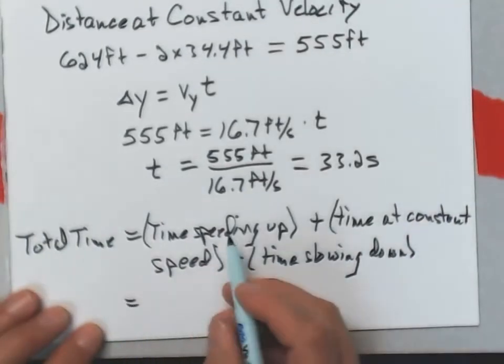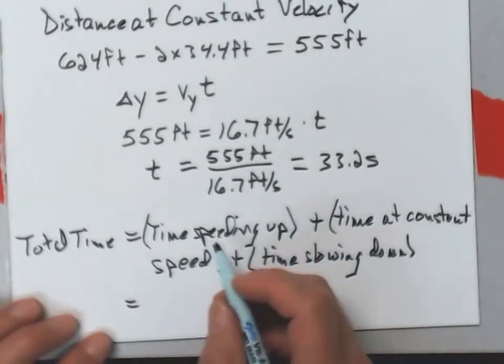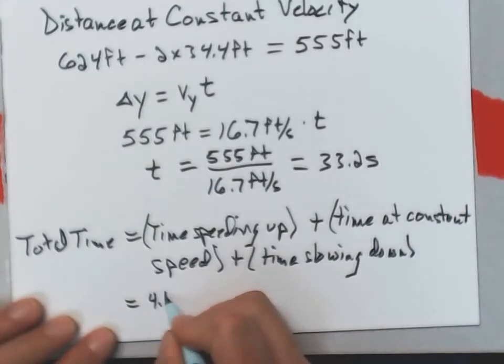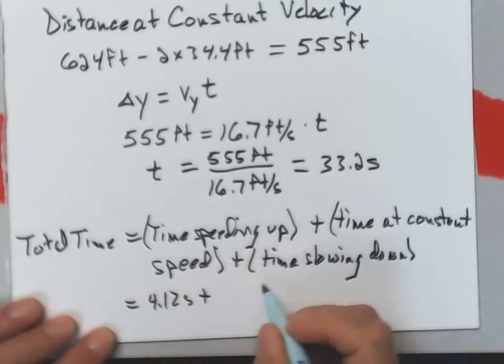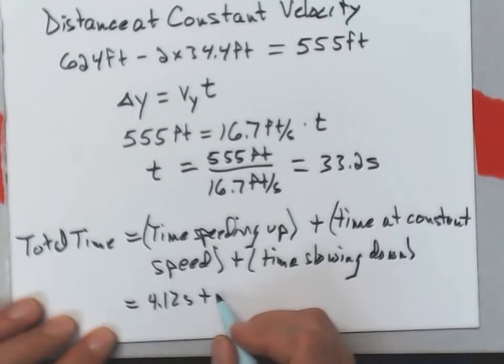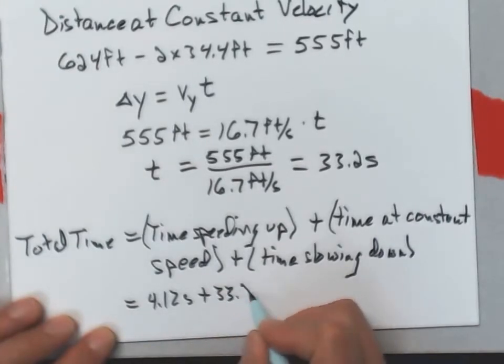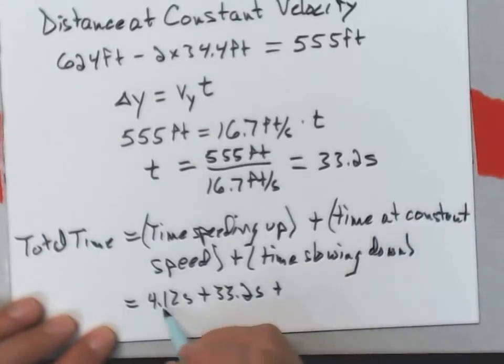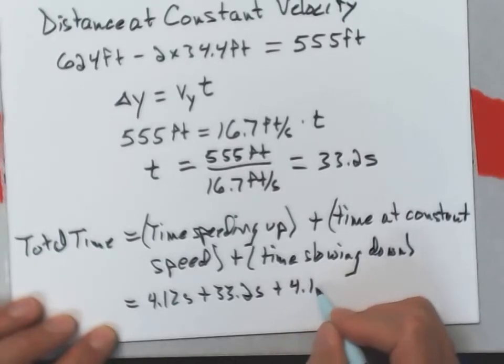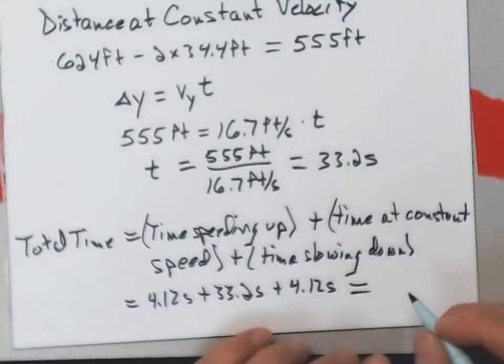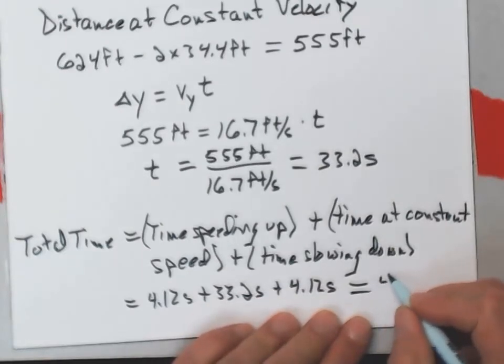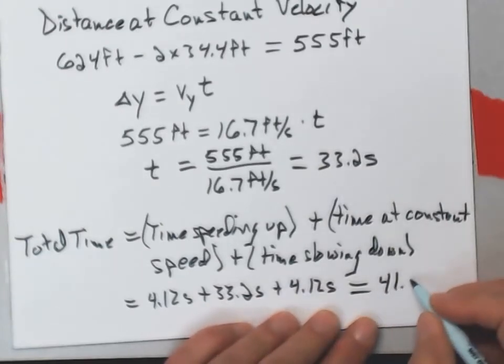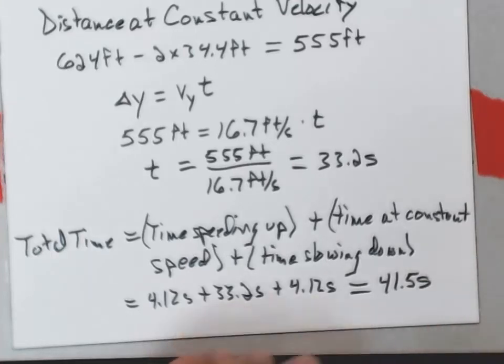And this happens to be that 4.12 seconds, the time at constant speed was the 33.2 seconds, and the time slowing down was also 4.12 seconds. So I get a total time for the trip of 41.5 seconds. And that's good enough. Fairly complex problem.